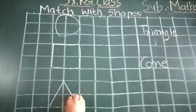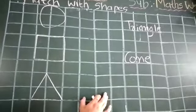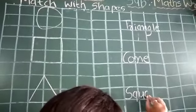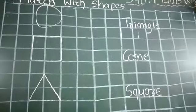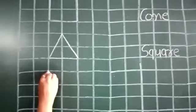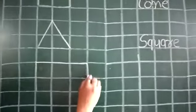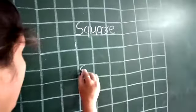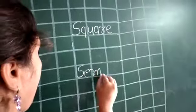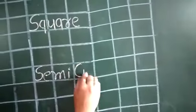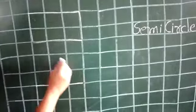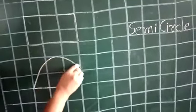Draw with me. Triangle. Leave three boxes. Write here S-Q-U-A-R-E. Square. Again leave three boxes. One box to the rectangle. Again leave three boxes. Write here S-E-M-I-C-I-R-C-L-E. Semi-circle. Again leave one box. Do with me half circle. Semi-circle.